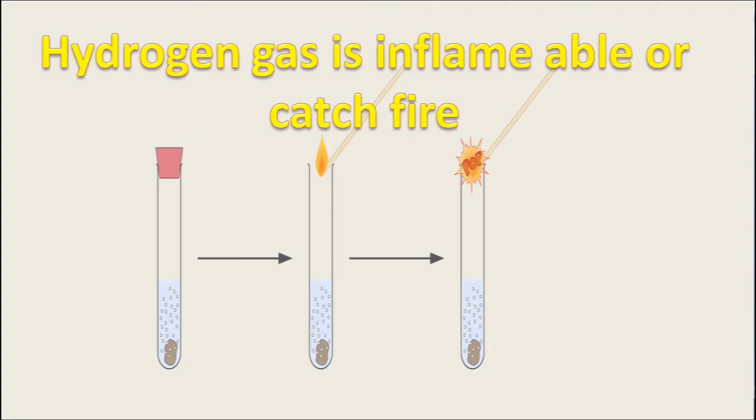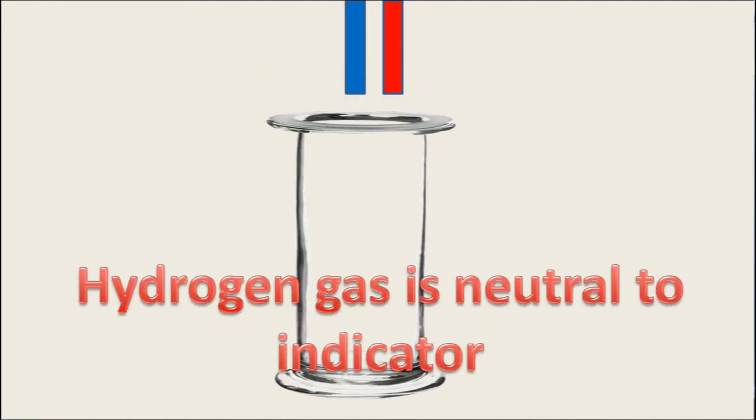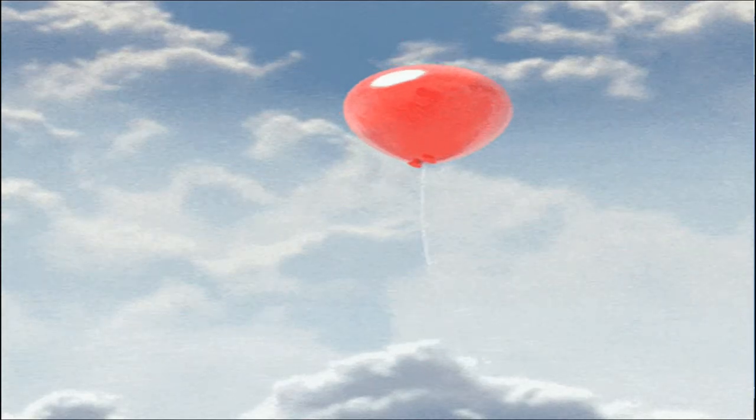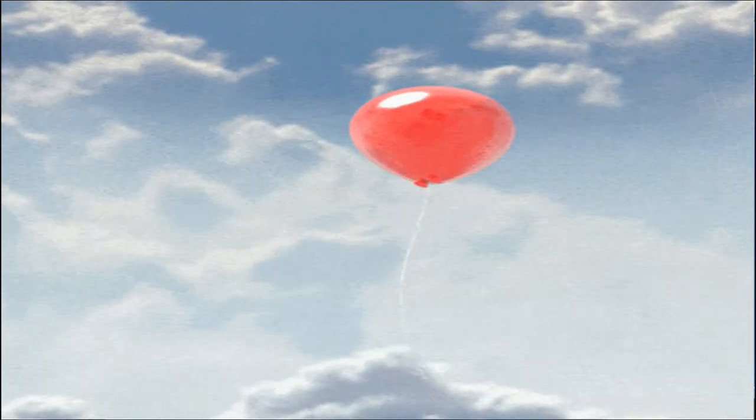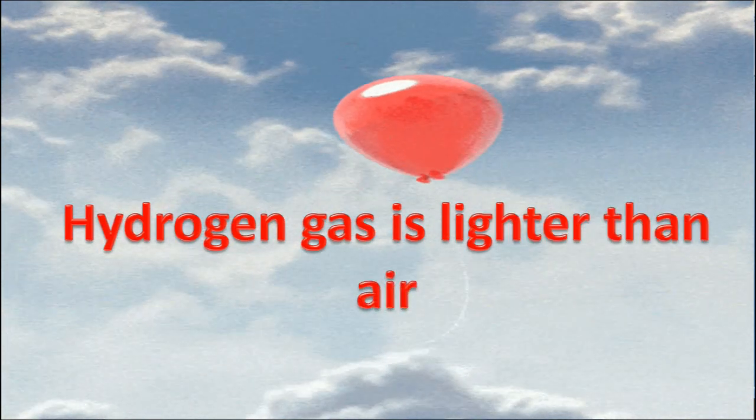Hydrogen gas is inflammable or catches fire. Hydrogen gas is neutral to indicator. When blue or red litmus paper is kept in gas jar containing hydrogen, there is no change in color of either litmus paper. Hydrogen gas is lighter than air.